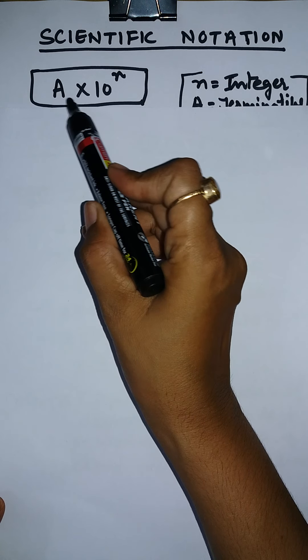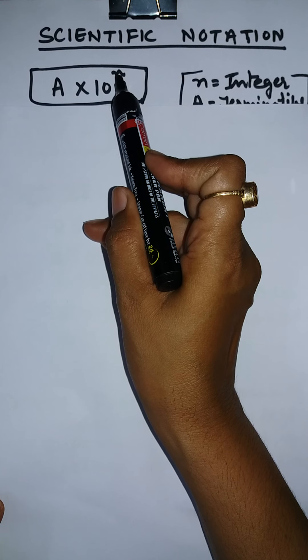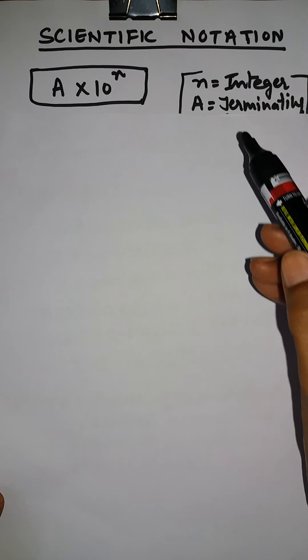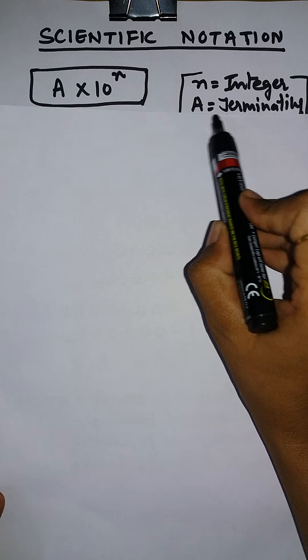Hello everyone. Our today's topic is scientific notation. Scientists and engineers often find it convenient to write numbers in this form. This is the method of writing very large numbers or very small numbers using exponential notation, in the form of a into 10 raised to the power n. This is called scientific notation form, where a is a terminating decimal and n is an integer.